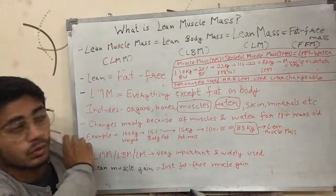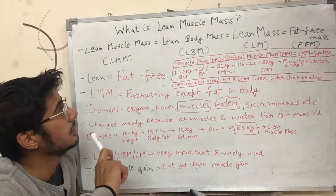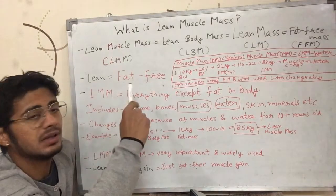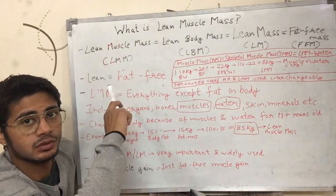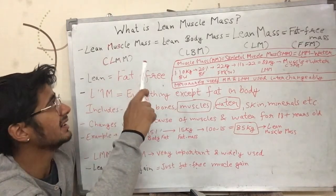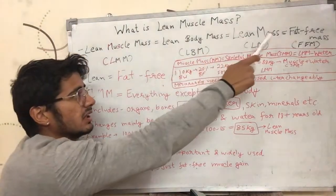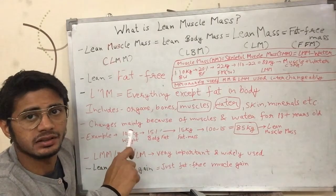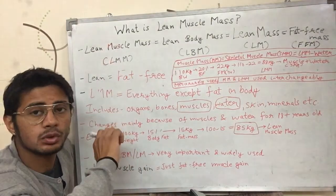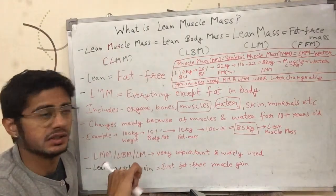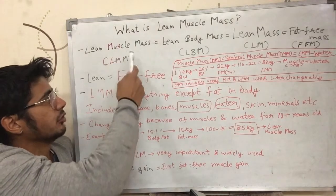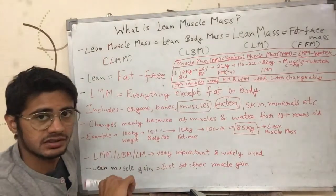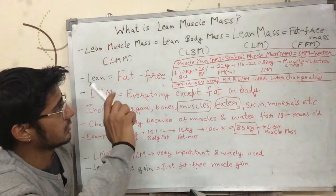Today we are going to talk about what lean muscle mass is. Lean muscle mass has many synonyms you might find on the internet: lean muscle mass, lean body mass, lean mass, and fat free mass. All of these are used interchangeably and mean the same thing. The most widely used names are lean muscle mass and lean body mass, with short forms LMM, LBM, LM, and FFM.